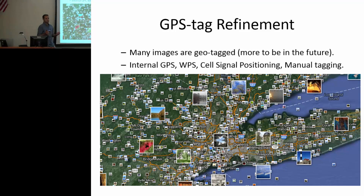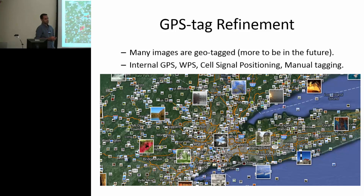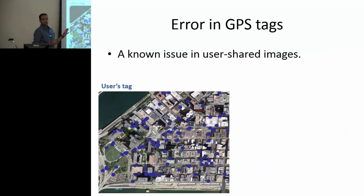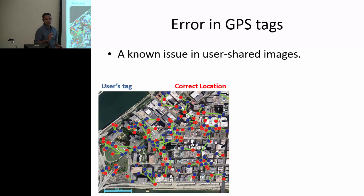Most of the images nowadays are coming with GPS tags. Most of the pictures you take with your cell phones or other devices have some sort of GPS tag, coming with internal GPS tags or WPS signals or cell tower signals. There is a known issue with these tags — there are a lot of inaccuracies. Here you can see each blue dot shows the GPS tag of one image provided by the user, and the red dot shows the correct GPS tag found using manual tagging. Most of the time the corresponding dots are very close to each other, but there are long green lines, which means there are significant inaccuracies in GPS tags that can't be ignored.